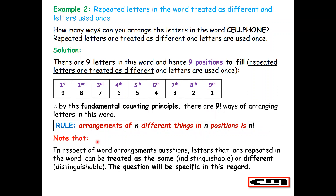Note that in word arrangement questions, letters that are repeated in the word can be treated as the same — that is, indistinguishable — or different, that is, distinguishable. The question will be specific in this regard. If you are simply asked how many ways you can arrange the word 'cell phone' with no other information, you treat the repeated letters the standard way. But if the question specifies to treat repeated letters as different, then you apply that approach.